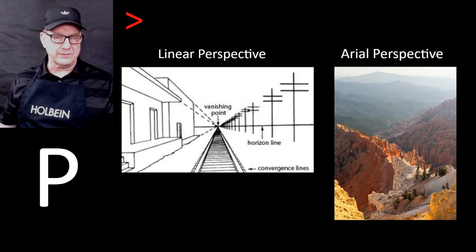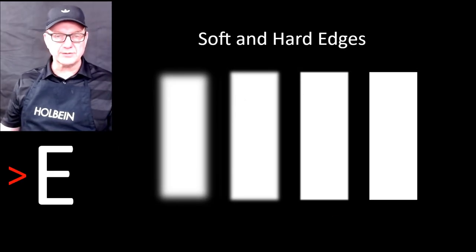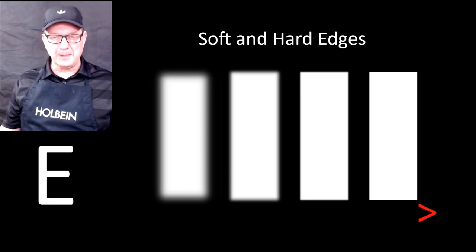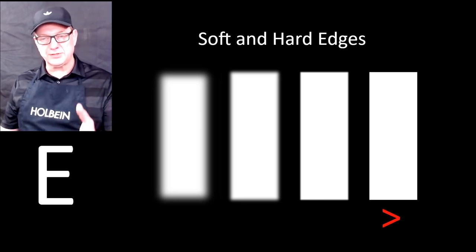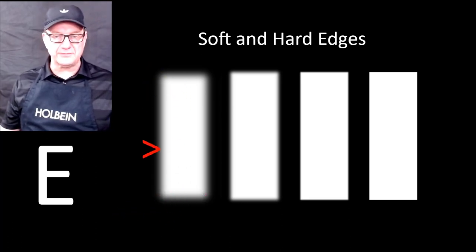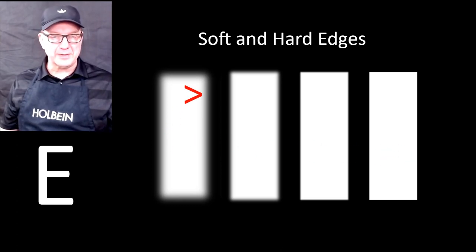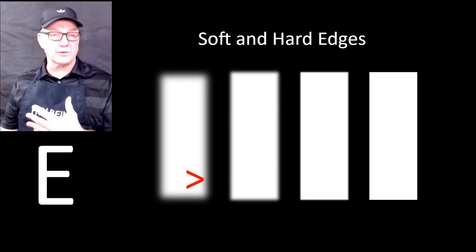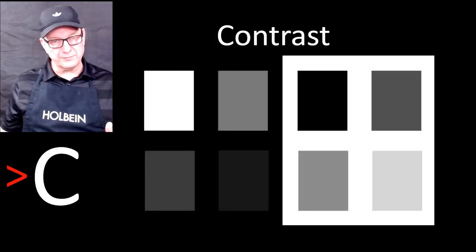The second letter is E, which stands for edges. Edges are a way of making things look forward or backward. Take a look at this chart — which of these shapes looks farther back? The one with the soft edge, of course. Same shape, same size, but soft edges make it look farther back. So soft and hard edges make things recede or come forward in a painting.